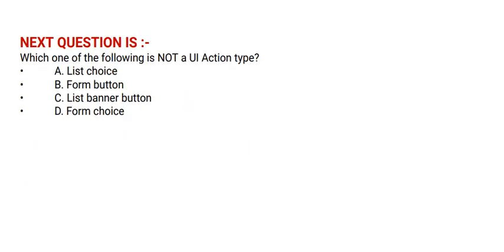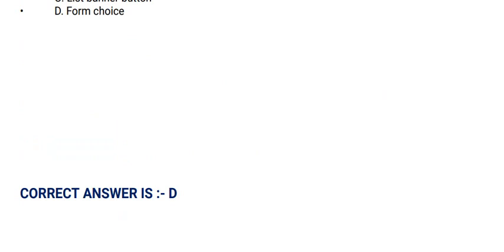Next question is: which one of the following is not a UI action type? Option A: list choice. Option B: form button. Option C: list banner button. Option D: form choice. And the correct answer is option D.